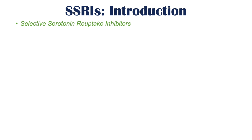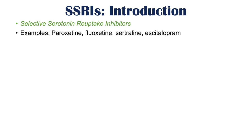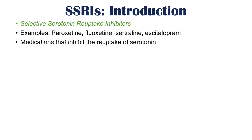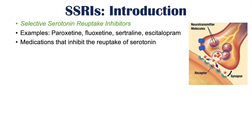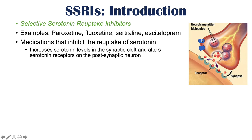The SSRIs are the selective serotonin reuptake inhibitors. Some examples of these medications include paroxetine or Paxil, fluoxetine or Prozac, sertraline or Zoloft, and escitalopram or Cipralex. These are medications that inhibit the reuptake of serotonin as their name implies. They actually inhibit the reuptake of serotonin from the synaptic cleft.